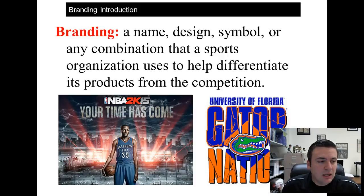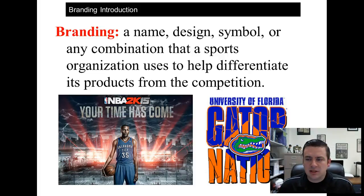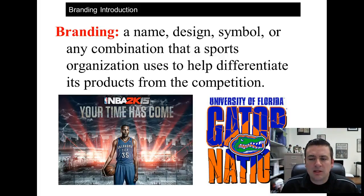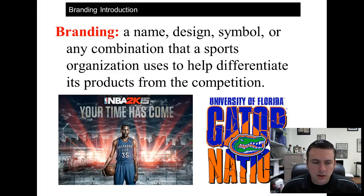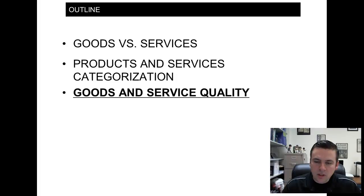The last term I want to cover here — though we'll discuss it more extensively in Chapter 8 — is branding. Branding is defined as a name, design, symbol, or any combination of those things that a sport organization uses to differentiate its products from competition. A brand is not just the product itself; it's the entire experience — logos, slogans. For example, the University of Florida's 'Gator Nation' is trademarked, and the Gator symbol is part of their branding. We'll talk more about branding in Chapter 8.